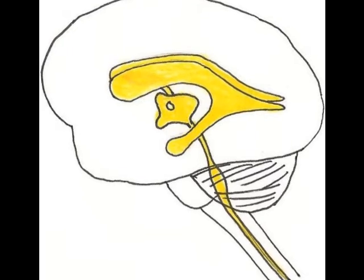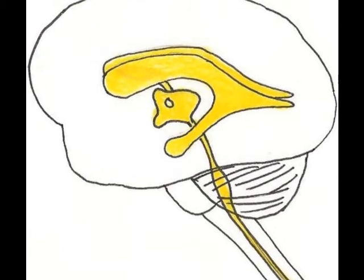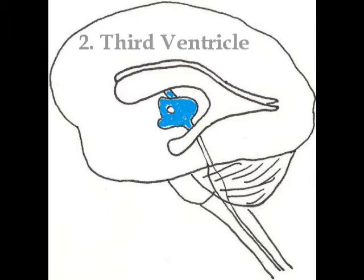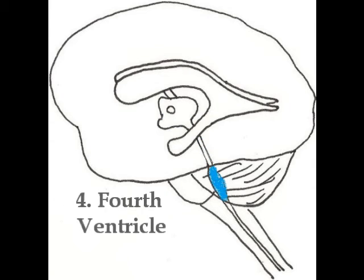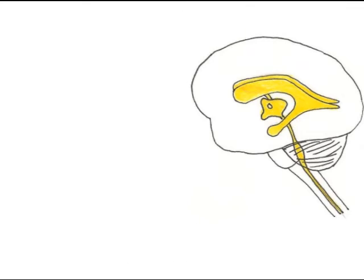The ventricular system is made up of five parts. Ready? We have the lateral ventricle, the third ventricle, the cerebral aqueduct, the fourth ventricle, and the central canal of the spinal cord.